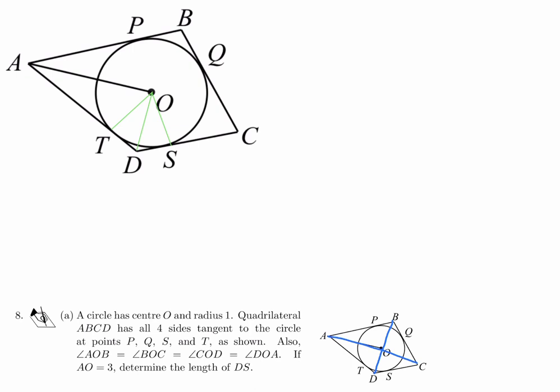If all of them are equal, then all of them together must equal 360 and each must be 90. So instead of telling us that they're 90, they told us that they're all equal. It just means that angle DOA is 90 degrees. So this is 90 degrees right here. Another thing we know for sure is that since T is a tangent point, that angle is also 90 degrees.